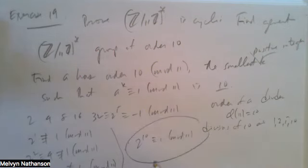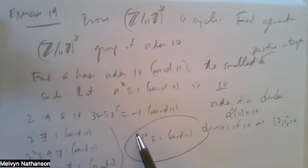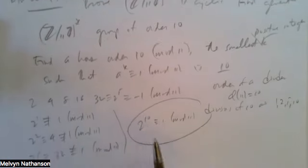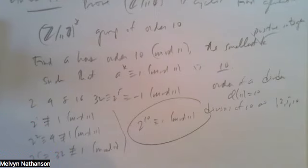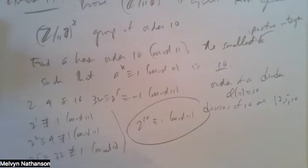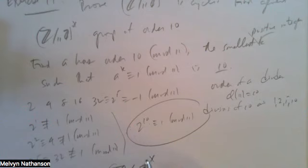That's the smallest power of 2 congruent to 1 mod 11. So Z mod 11Z*, the multiplicative group of order 10, is cyclic and is generated by the congruence class 2+11Z. The cyclic group generated by 2+11Z is the whole group Z mod 11Z*.